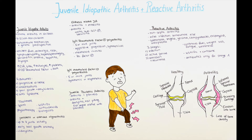The next form is juvenile psoriatic arthritis — an arthritis occurring together with psoriasis, or arthritis occurring with two of the following: dactylitis, nail pitting, or a first-degree relative with psoriasis. It occurs usually asymmetrically, mainly in small and intermediate-sized joints. In around half of the cases one of the knees is affected, in around 40% the fingers are affected, and in around 25% the toes are affected.